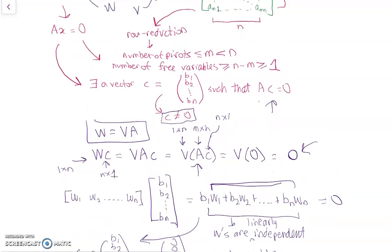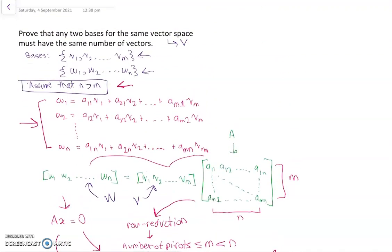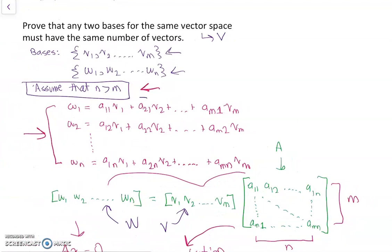And since our initial assumption that led to a contradiction was that N was greater than M, so this means we can't have N greater than M. This is impossible. And similarly, we can't have M greater than N. So we must have M equals N.